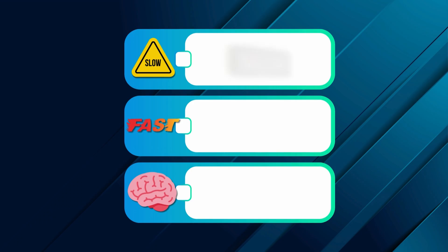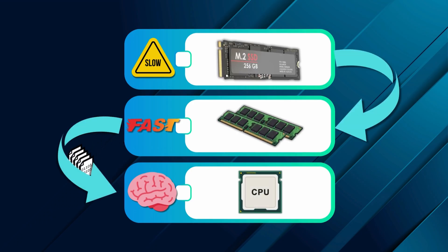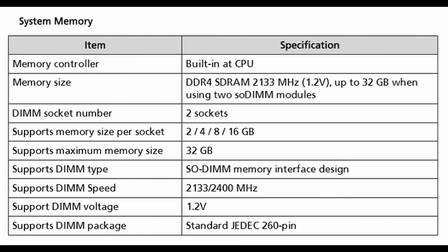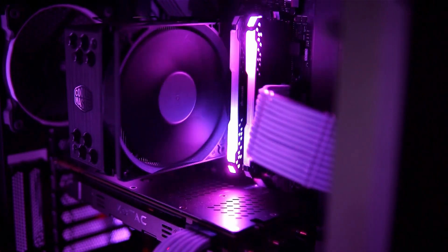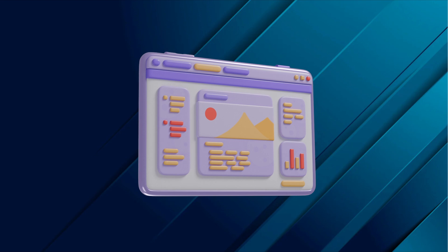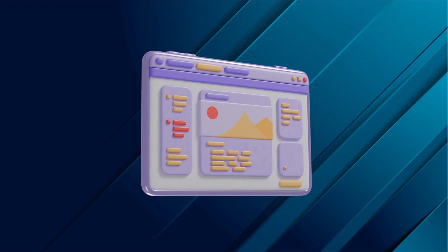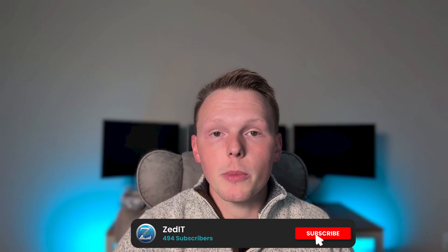To bring it all together — RAM is your computer's short-term memory and workspace. It bridges the gap between the lightning-fast CPU and the slower long-term storage. Its size, speed, and configuration all play a role in how smooth your experience feels. It's about balance — enough space for your system to think clearly without tripping over itself. Next time you open a dozen browser tabs or run a few programs at once, just remember: RAM is what keeps it all together. Now you should understand why RAM is such a vital component in every system. Let me know down in the comments how much RAM is in your system, and if you found this video helpful, drop a like and subscribe so you don't miss the next one. Thank you so much for watching, and as always, keep growing.